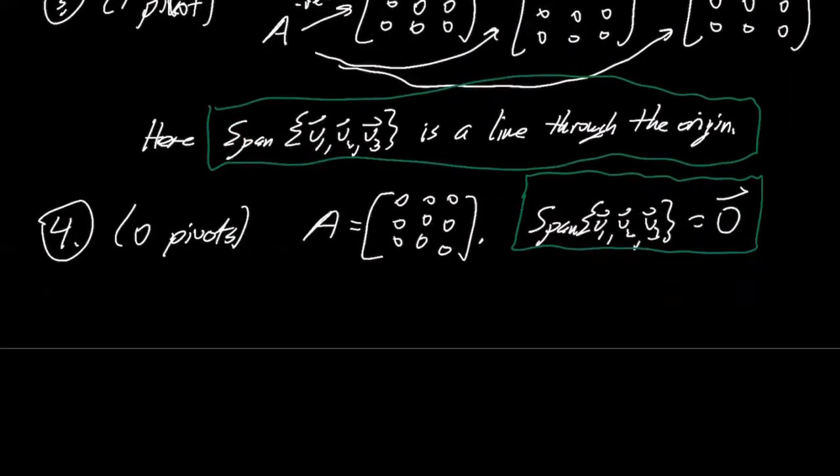So you could say the number of pivots. I guess maybe some takeaways you could have is that you could have a span of every possible dimension. Take away: a span of each possible dimension. In three-dimensional space, you'd have something zero dimensional, one dimensional, two dimensional, or three dimensional.